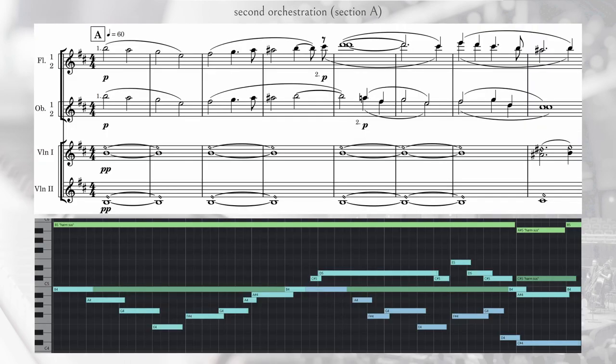All right, so here's a different orchestration of the A section that I made in my last video. This one features a combination of flutes and oboes on the melodic material, with first and second violins playing static harmonic sustains. So the strings are clearly in more of a background texture in this version than in the last version.